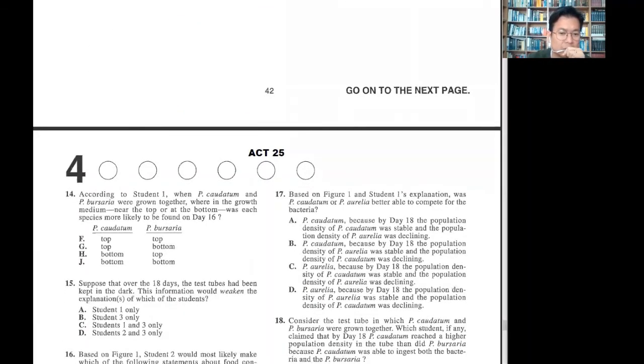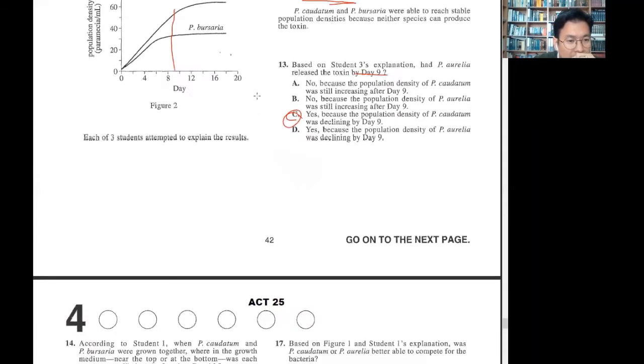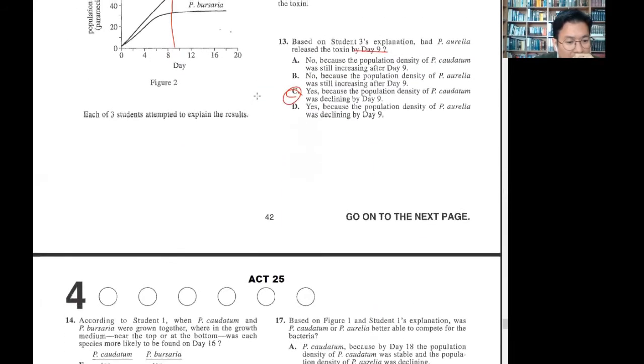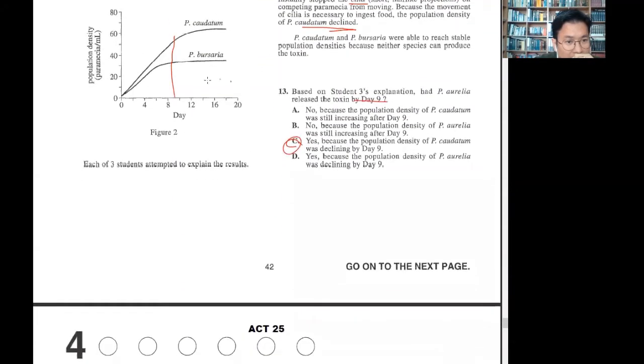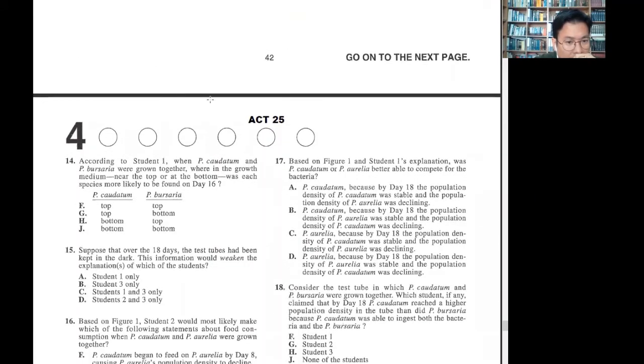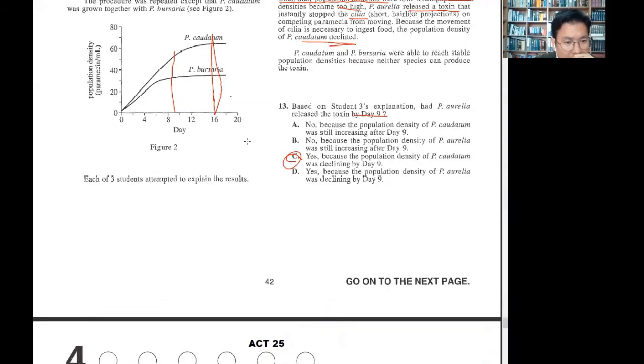According to student 1, when P would grow together, growth medium near top or bottom? It says surface, right? Day 16, right here. Density is high on the code A2. So top and bottom. Top and bottom if you think it is.